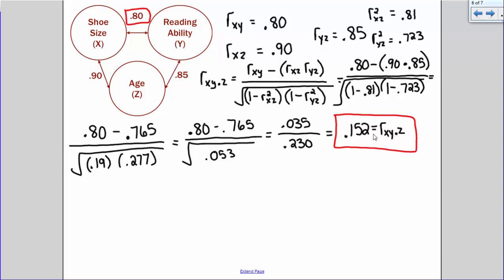There seems to still be a weak to moderate relationship between shoe size and reading ability. But we know that the reason that we saw such a strong positive relationship between shoe size and reading ability is mostly due to the fact that both of these variables are related to age. So this is much smaller than this. So we know that the Z variable inflated or strengthened that observed relationship between X and Y. Both of these things are related to age, so that's why we see such a strong positive correlation here.